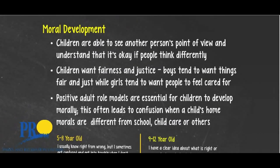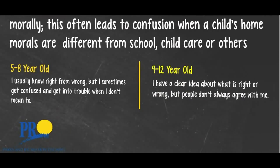Moral development is next. Children are able to see another person's point of view and understand that it's okay if people think differently. Children want fairness and justice — boys tend to want things fair and just, while girls tend to want people to feel cared for. Positive adult role models are essential for children to develop morally. This often leads to confusion when a child's home morals are different from school, childcare, or others. As a leader, it's important to set strong moral examples and to involve families in the program so participants feel a connection between their home life and after-school life.